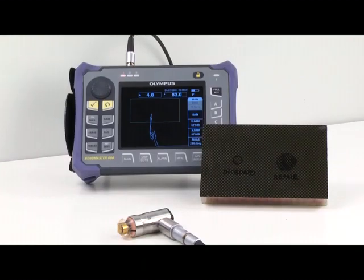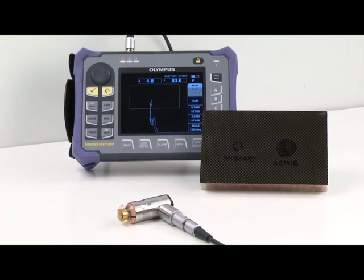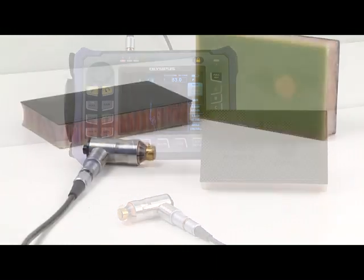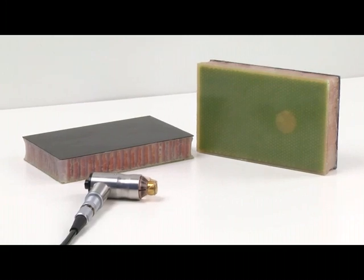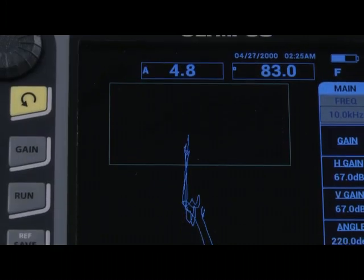Now we'll discuss how to define working parameters for inspecting honeycomb composite with the MIA mode. This section is targeted at users who write procedures or develop bond testing applications.